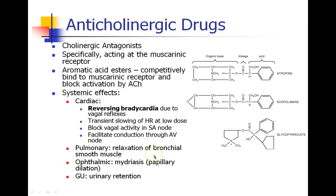In the pulmonary system, anticholinergic drugs relax bronchial smooth muscle. The drug Atrovent is atropine in inhaled form. In the eyes, anticholinergic drugs cause mydriasis, which is dilation of the pupils, and in the genitourinary system they cause urinary retention.